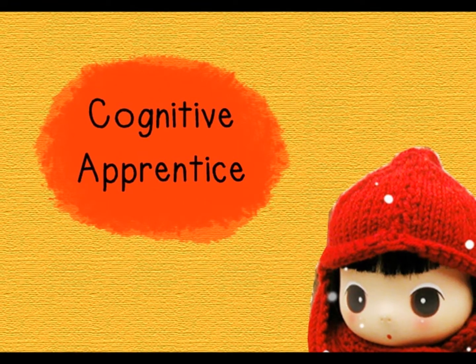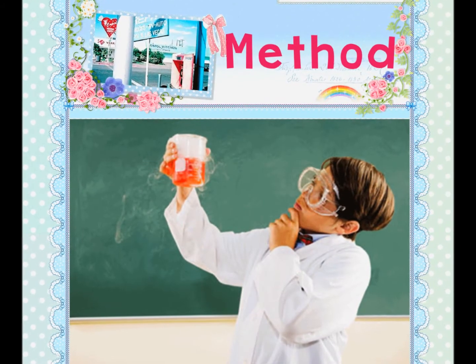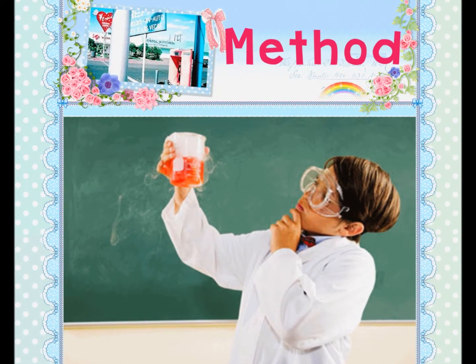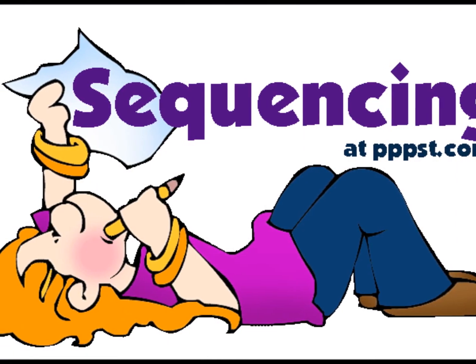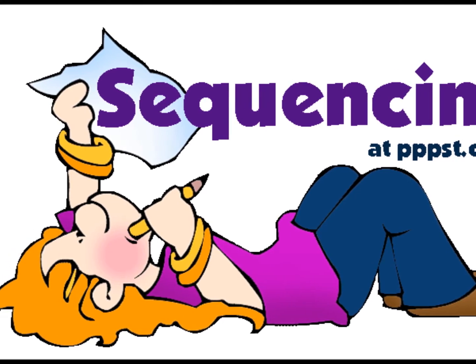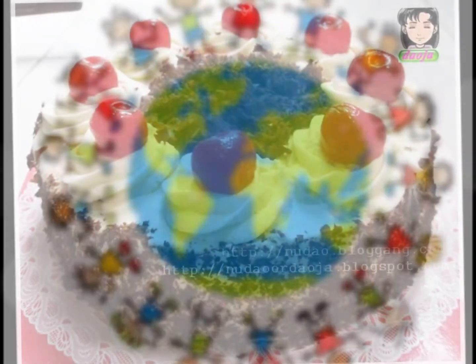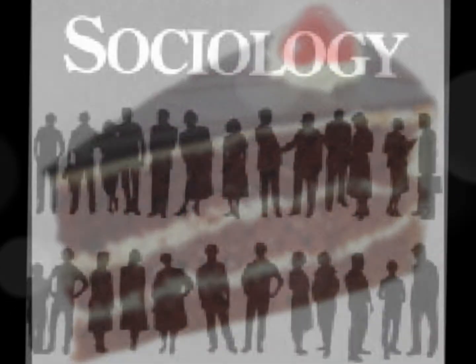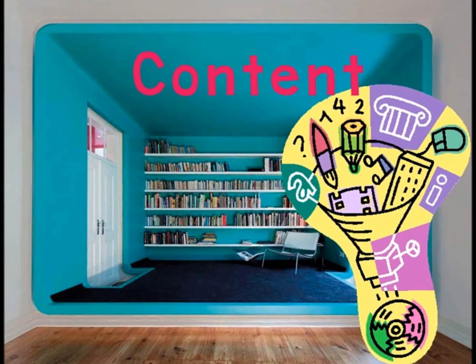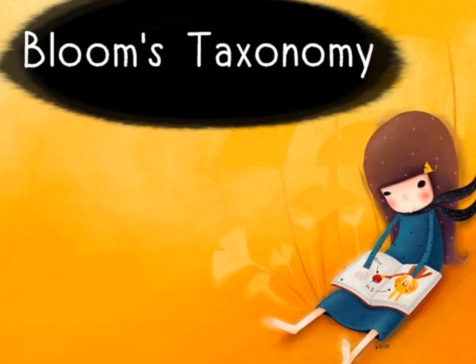The first group is Cognitive Apprenticeship. If someone guides you, it has a method that is about ways for development of skill. Sequencing is key to ordering learning activities. For example, Global before Local — if you look at the whole, then look at a piece. Sociology is about social characteristics and content is the type of knowledge required for skill.